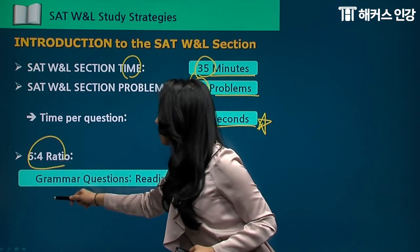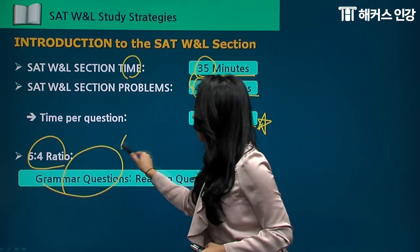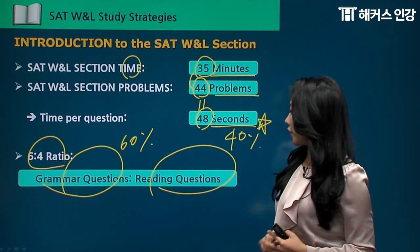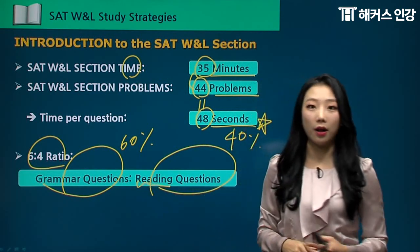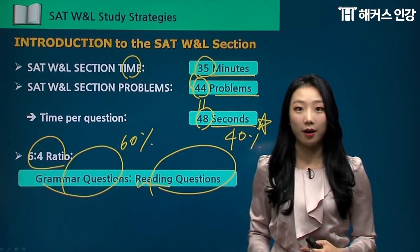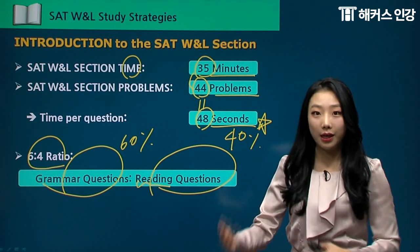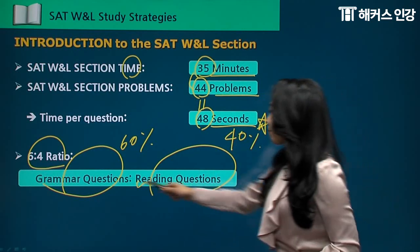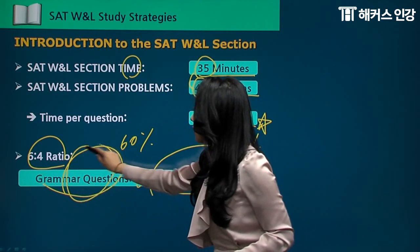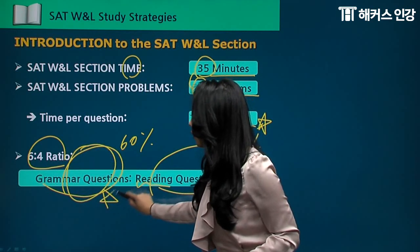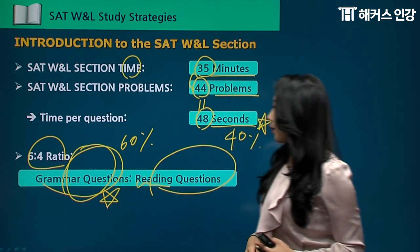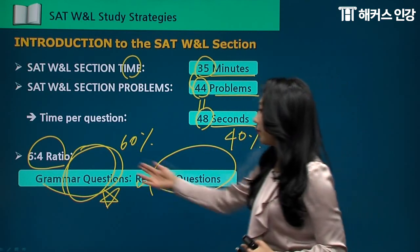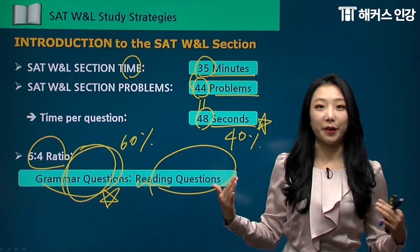The 60/40 ratio means you'll have 60% grammar questions on this section, and the remaining 40% will be reading questions. The reading questions will sound a lot like the evidence-based reading on the SAT — critical thinking, critical reading, context, coherence, things like that. Grammar questions we'll go through thoroughly in a bit, but they're pretty easy as long as you memorize the grammar concepts and types of problems tested under that category.